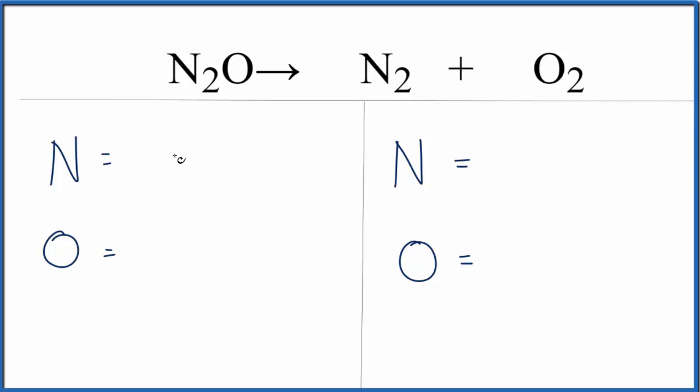To balance it we'll add up the atoms on each side. We have two nitrogens and one oxygen. Over on the product side we have two nitrogens and two oxygens.